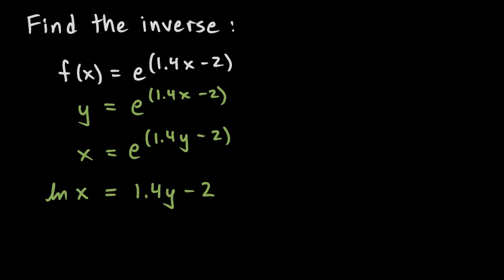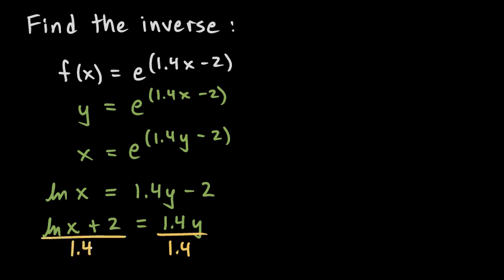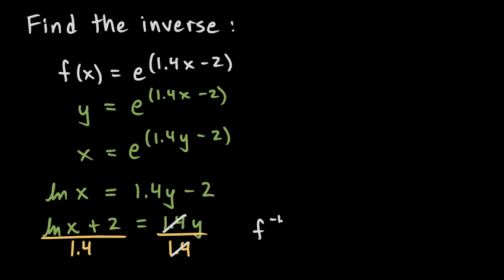The rest is ordinary algebra. We need to solve for y, so we add 2 to each side, giving us the natural log of x plus 2 equals 1.4y. Then we divide both sides by 1.4, the 1.4 cancels out, and y is now isolated. So f inverse of x is equal to the natural log of x plus 2, all over 1.4.